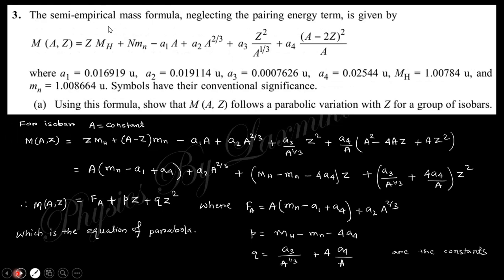Let's start today's discussion. The first question says: using the semi-empirical mass formula — neglecting the pairing term — as given, where the constants are provided, show that the nuclear mass M(A,Z) follows a parabolic variation with Z for a group of isobars. For isobars, the mass number A is constant, so for a given constant mass number, we need to prove that M(A,Z) follows a parabolic curve.